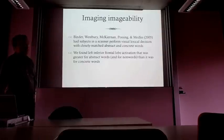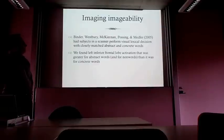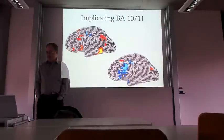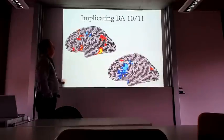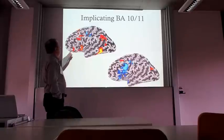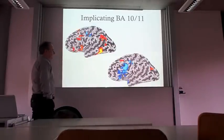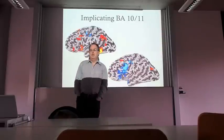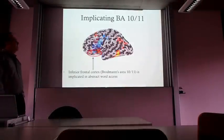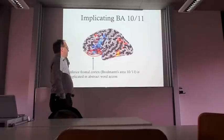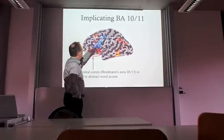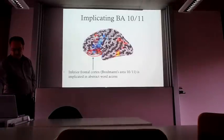What we found is shown on the next slide: left inferior frontal lobe activation most strongly implicated in abstract word access. The top slide shows abstract words minus non-words—orange and yellow indicate more activation for abstract words. The bottom shows concrete words minus abstract words in blue. Here they are overlaid. You can see this activation in the inferior frontal lobe, Brodmann's areas 10 and 11—one of the key areas that most strongly differentiates abstract and concrete words.